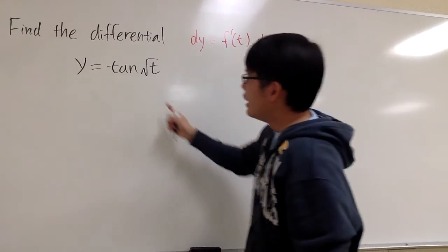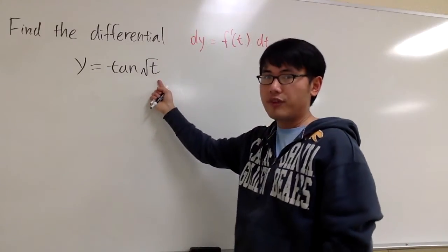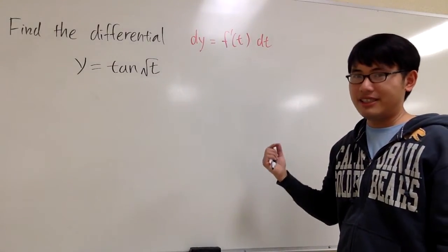All we are saying is, look at this part, take the derivative of that, and then multiply by dt at the end. That's it.